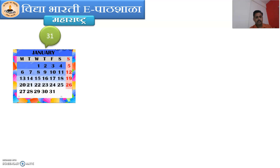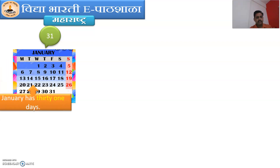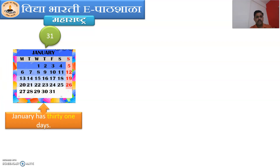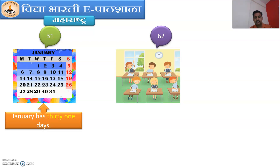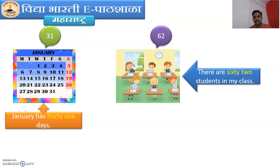Next number is 31. There is a calendar and the month is January. How many days are there in the month of January? January has 31 days. Next number is 62. There is a class and there are some students. How many students are there in the class? There are 62 students in my class. Good.